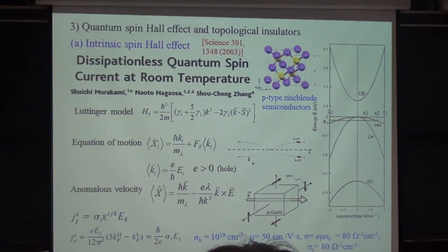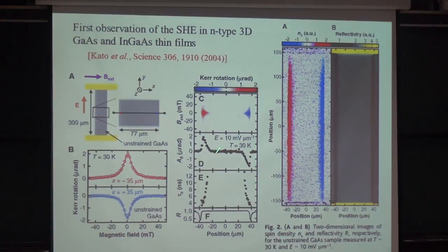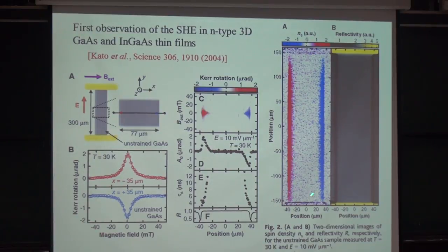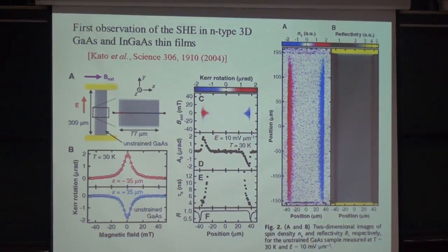This field developed very quickly. One year later, this was observed experimentally by the Awschalom group. They beautifully demonstrated that spin-up electrons accumulate on the right-hand side and spin-down on the left-hand side.